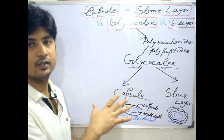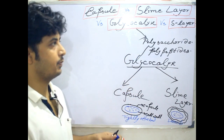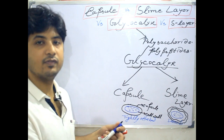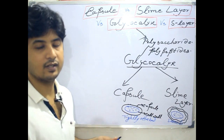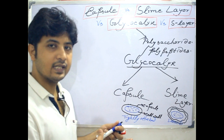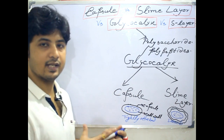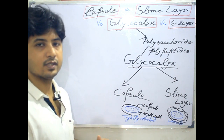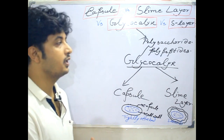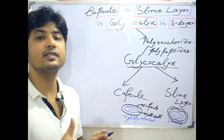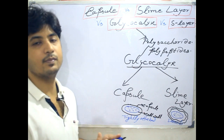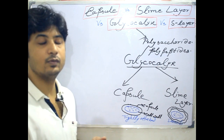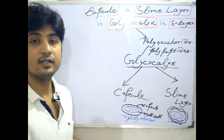So glycocalyx is the main substance — the polysaccharide or polypeptide — which is divided into capsule and slime layer. The definition of capsule: the glycocalyx layer which is tightly bound with the bacterial cell and may contain polysaccharide or peptides in its composition is called capsule. Likewise, the glycocalyx layer which is loosely attached to the bacterial cell and composed of polysaccharides is called slime layer, and it can be easily removed.